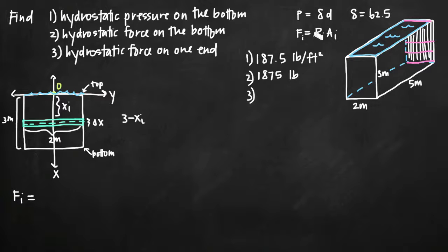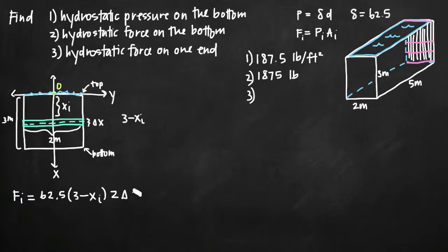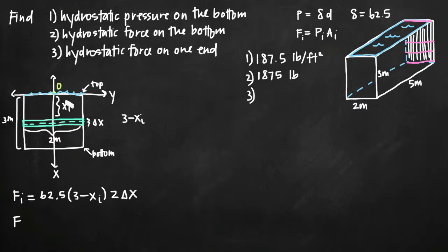We find the hydrostatic force against this particular rectangle using force equals pressure times area. Pressure is density times depth: 62.5 times (3 minus x sub i). Area is 2 times delta x. So force on one rectangle is 62.5 times (3 minus x sub i) times 2 delta x. To find force against the entire end, we can't just use one rectangle — we need to sum over all rectangles.